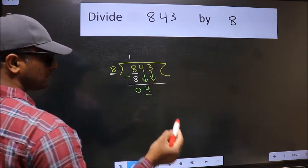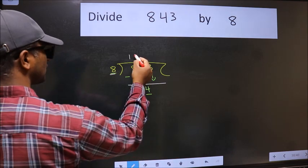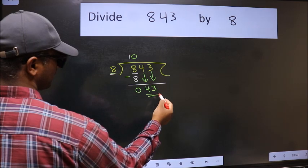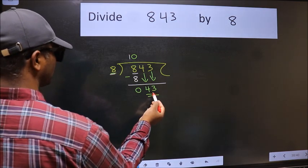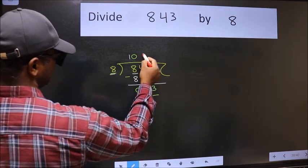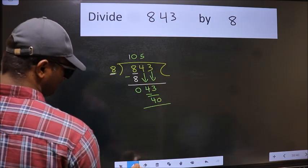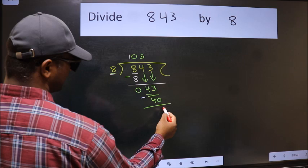And the rule to bring down the second number is we should put 0 here. Then only we can bring this number down. Now 43. A number close to 43 in the 8 table is 8 fives 40. Now we should subtract. We get 3.